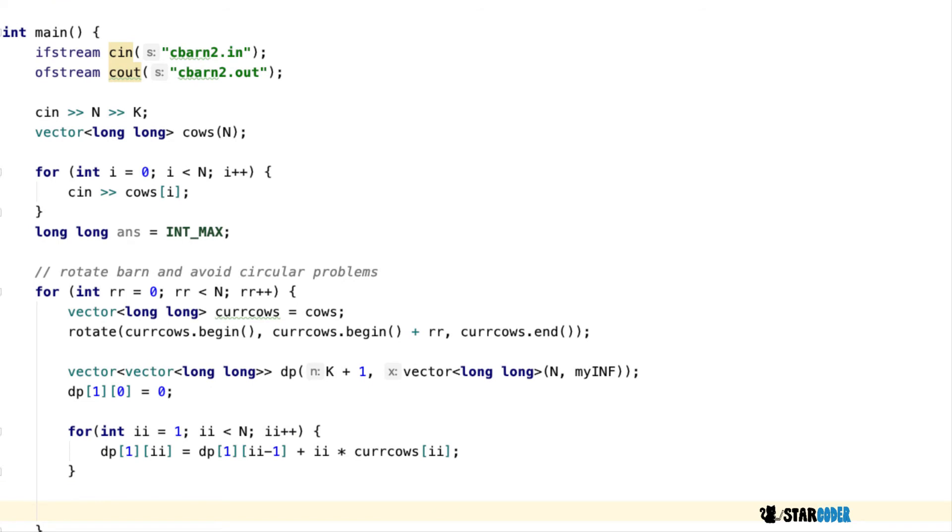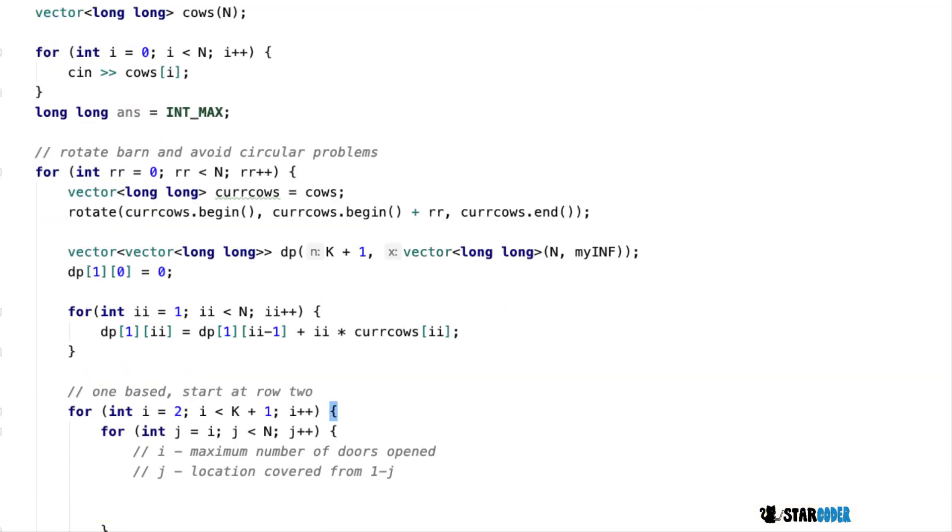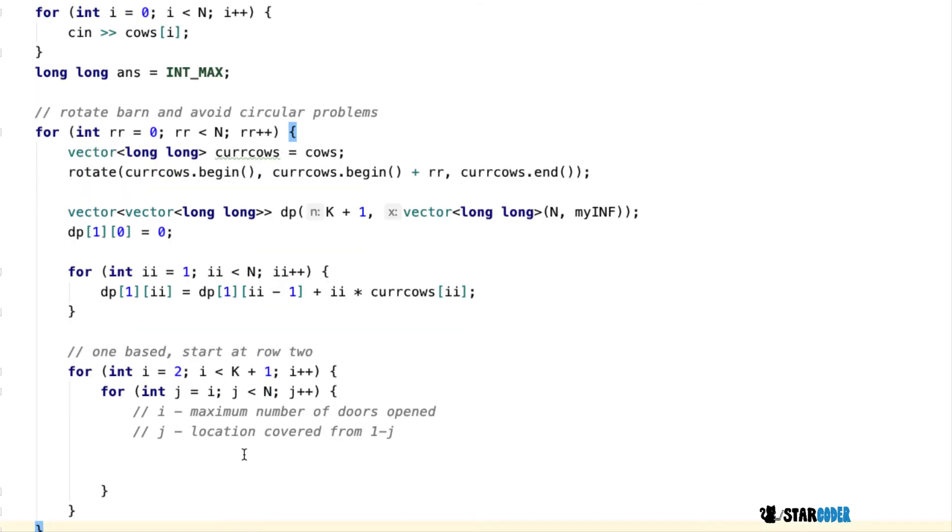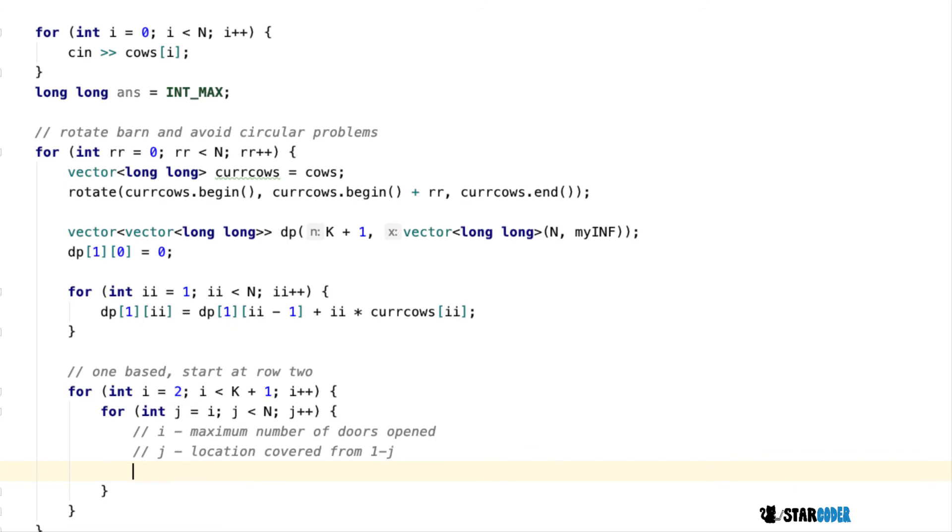Once we've done that, we start at row two and loop through two main things: i and j. I is the current door we're on, and j is the location we're at. This means we assume that we've opened the ith door at j.